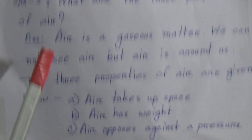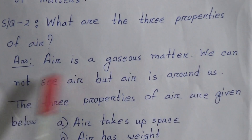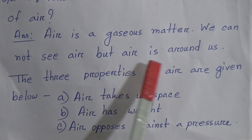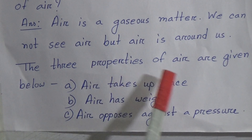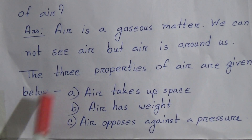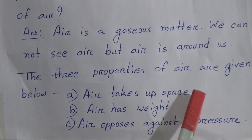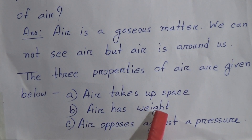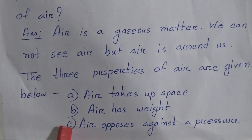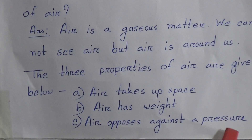Short question two: What are the three properties of air? Answer: Air is a gaseous matter. We cannot see air, but air is around us. The three properties of air are: (a) air takes up space, (b) air has weight, and (c) air opposes against a pressure.